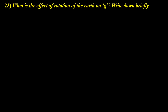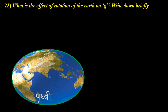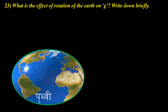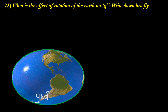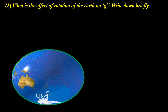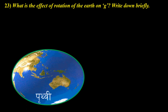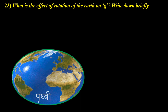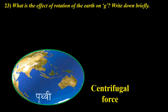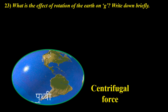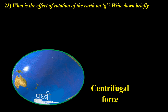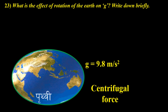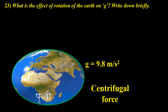What is the effect of rotation of the Earth on g? Since Earth is rotating around its axis, every object lying on the surface of the Earth is also rotating around the axis of the Earth, meaning the bodies are moving in a circle. If a body moves in a circular path, a centrifugal force acts on the body in the opposite direction. Because of this centrifugal force, the gravity of the Earth acting on the body becomes less. Since gravity is less, acceleration will also be less, and its average value is 9.8 m/s².